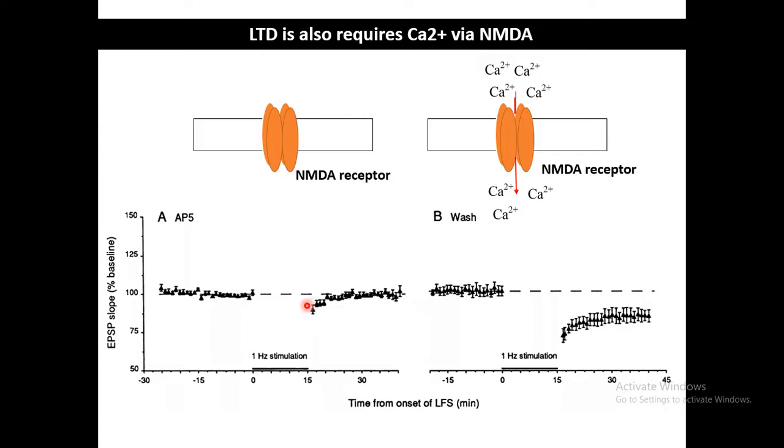You can see the EPSP slopes recorded over time are nearly like baseline after 1 Hertz low frequency stimulation. Depression didn't take place because NMDA is blocked. But if the blocker is washed out, you can see the synaptic strength has decreased from baseline, meaning depression had occurred. For LTD, concentration of calcium and calcium entering via NMDA receptor is important.